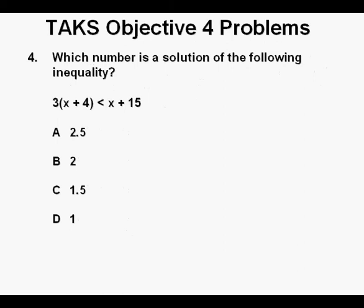Problem 4: Which number is the solution of the following inequality? The inequality shown is 3 times quantity x plus 4 is less than x plus 15. What we need to find out is which of these answers, A through D, substituted in for x make the inequality a true statement.